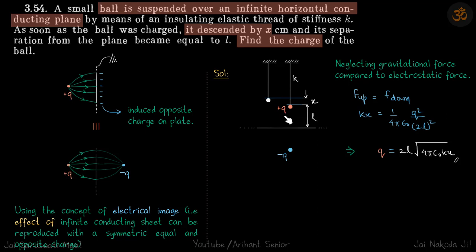We need to find what is the q charge if the stiffness of the string is k. Neglecting gravitational forces compared to electrostatic force, we can say that because it is at rest, upward force on this charge is same as downward force. Upward force is kx and downward force is kq²/(2l)², so q equals 2l times the square root.